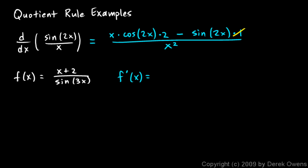Okay, so f prime is going to be low d high, so that's sine 3x, that's low, times the derivative of the top, which is just 1. The derivative of this is just 1. So we don't even need to write times 1 there. Minus high x plus 2, and you do need those parentheses, times the derivative of what's down on the bottom, d low. So that would be cosine of 3x times 3.